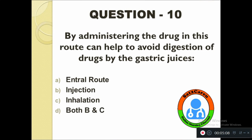Question number ten: By administering the drug through this route, you can help to avoid digestion of drugs by the gastric juices. Option A: Enteral route, B: Injection, C: Inhalation, D: Both B and C. The correct answer is both B and C.